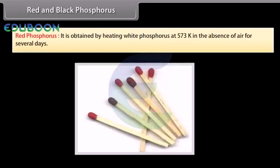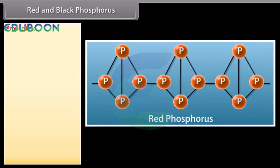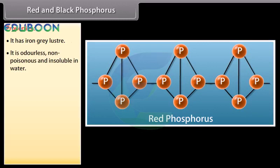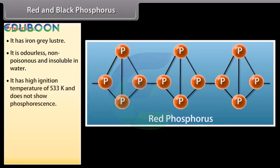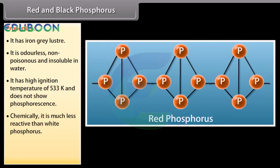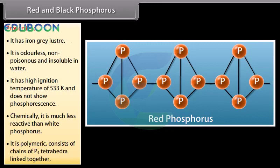Red phosphorus is obtained by heating white phosphorus at 573 K in the absence of air for several days. Properties: it has an iron grey luster; it is odorless, non-poisonous and insoluble in water; it has a high ignition temperature of 533 K and does not show phosphorescence; it is chemically much less reactive than white phosphorus. It is polymeric, consisting of chains of P4 tetrahedra linked together.